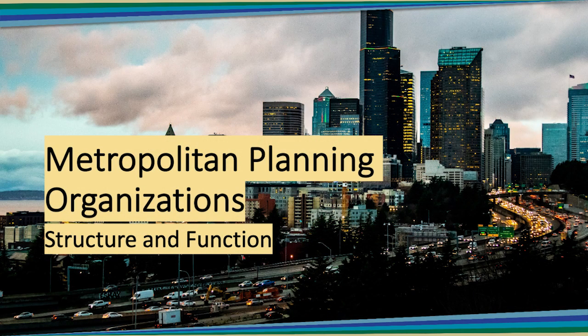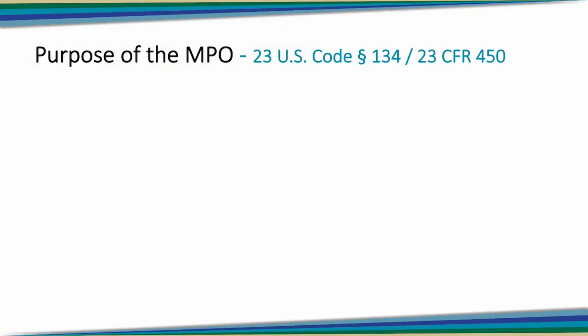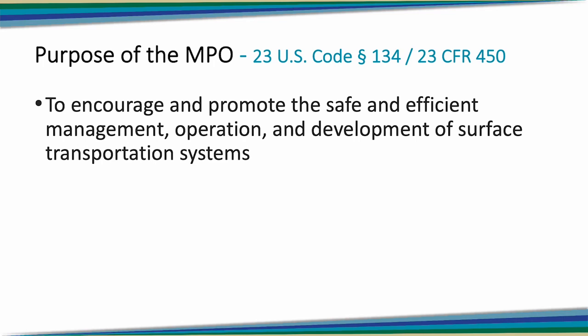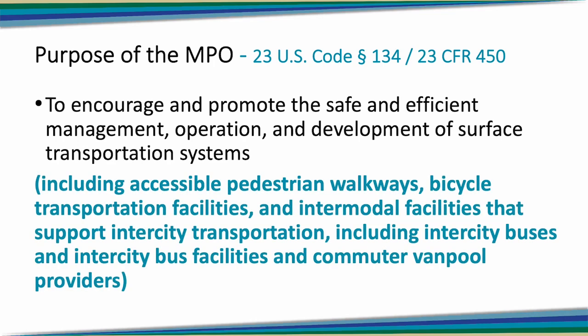So let's dive right in on this discussion on MPO structure and function. By the end of this, everybody watching should have a pretty solid base on this subject. So let's start with the purpose of MPOs. In the last module, we discussed the history of transportation planning and the varying perspectives on the interstate system and which agencies should be involved. The purpose of MPOs is written in federal statute in the U.S. Code and the Code of Federal Regulations — to encourage and promote the safe and efficient management, operation, and development of surface transportation systems. Really, the purpose of the MPO is to oversee the development of transportation planning and programming in metropolitan areas.